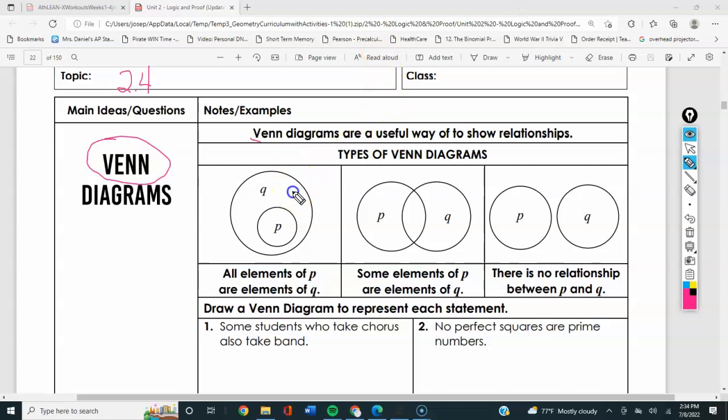Alright, let's get into it. There's three types of Venn diagrams we're going to look at in this class. The first type is when you have a circle inside of a circle. What this means is all elements of P are elements of Q.